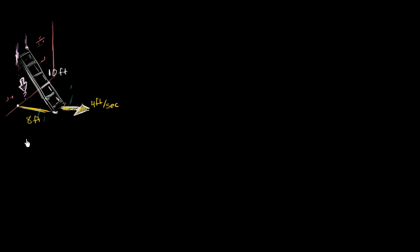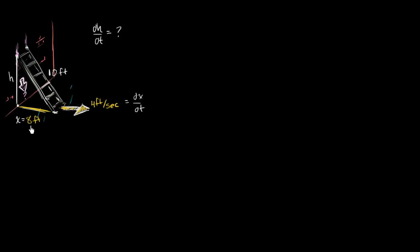So let's think about this. What do we know and what do we not know? If we call the distance between the base of the wall and the base of the ladder x, we know right now x is equal to 8 feet. We also know the rate at which x is changing with respect to time — that's 4 feet per second, so we call this dx/dt. Now let's call the distance between the top of the ladder and the base of the wall h. What we're really trying to figure out is dh/dt, given all this other information. So let's find a relationship between x and h, take the derivative with respect to time using the chain rule, and solve for dh/dt.